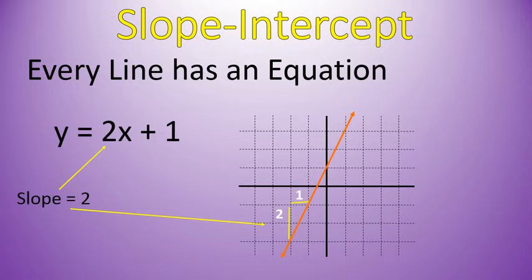So, this form of a line, y equals something times x plus 1, the number in front of x, that's the slope. So you don't have to know how to calculate slope, you just have to know how to look at this equation and pick the number that's in front of the x.